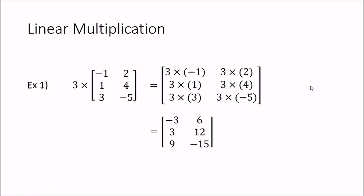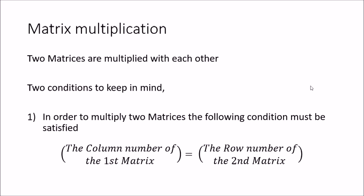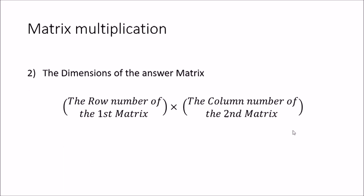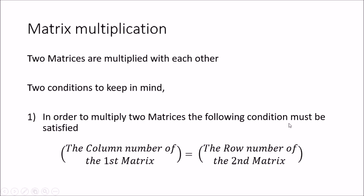Next we look at matrix multiplication, where we take two matrices and multiply them together. We have to keep two important facts in mind. First, we cannot multiply all matrices together — there is a certain criteria that must be satisfied: the column number of the first matrix must equal the row number of the second matrix. If this condition is not satisfied, you cannot multiply the matrices.